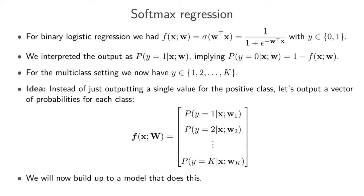The idea behind softmax regression is to start with binary logistic regression and see how we can convert it into a model that gives us probabilities for multiple classes. In binary logistic regression, the labels are either negative or positive, and the output of the model is interpreted as the probability of being in the positive class. That implies the probability of being in the negative class is just one minus the output of the model.